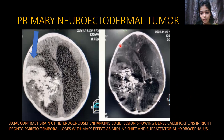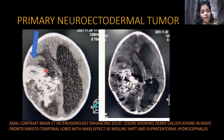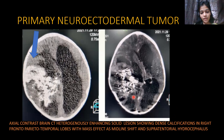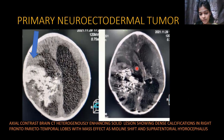This axial CT section shows a large heterogeneously enhancing lesion in the right frontotemporal region with extensive calcifications. The large tumour exerts a mass effect on the ventricle, causing extreme hydrocephalus and midline shift. We initially thought this was a supratentorial ependymoma due to the large and chunky calcification pattern of the lesion.